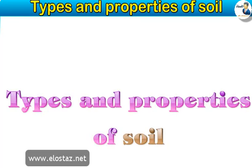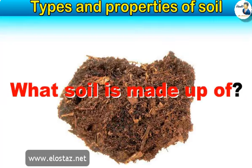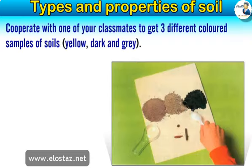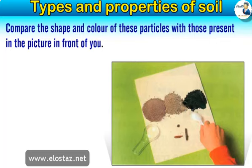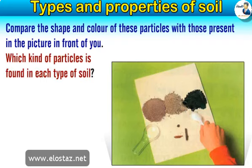Types and properties of soil. What is soil made up of? Cooperate with one of your classmates to get three different colored samples of soils: yellow, dark, and gray. With a hand lens, try to identify the different particles each sample of soil is made up of. Compare the shape and color of these particles with those present in the picture in front of you. Which kind of particles is found in each type of soil?